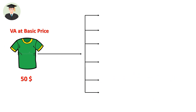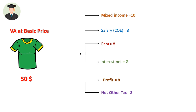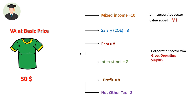So the final consumption output is the T-shirt, and this whole production process generates these values: mixed income $10, salary $8, rent $8, interest $8, profit $8, and net other tax $8. The value generated by this production process is $50, and the final production value is also $50. You can understand there are two types of sectors: unincorporated and corporate. On the other hand, government sector involvement is also present — government taxes and subsidies add value to this production process.